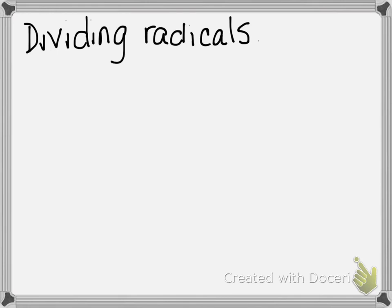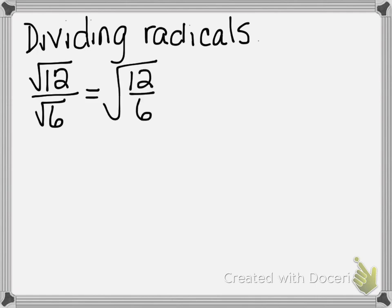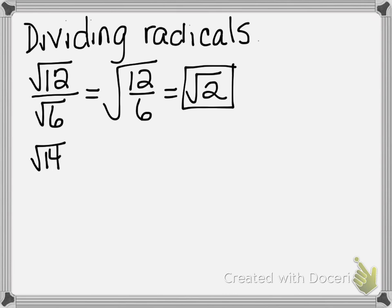I hope to make this as simple as possible. Here's one: the square root of 12 divided by the square root of 6. Because both numbers are under a radical, you can treat them as one fraction under one radical and simplify accordingly. For example, the square root of 14 divided by the square root of 2 is the square root of 7. If they're both under a radical, you can divide them. If numbers are not under a radical and they're across the fraction bar, you can cancel them out as well.